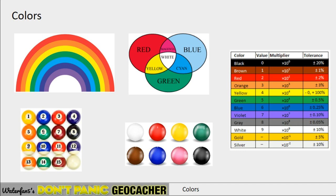It could also be snooker. In snooker, the white ball is the one you hit, so it's 0, the red ball is 1, yellow is 2, and so on to the black being 8. So different colors are used than in pool, but it still gives you numbers you can work with.